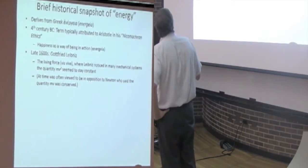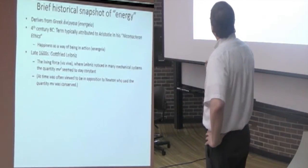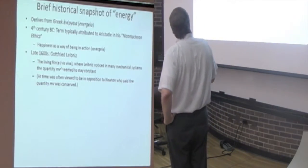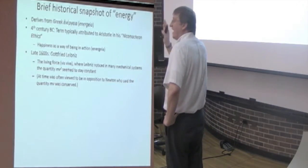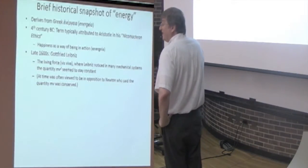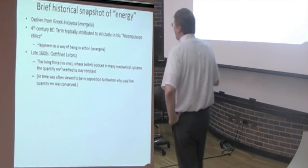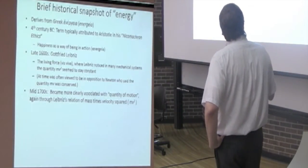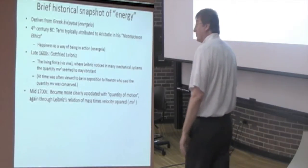Quite a while later, late 1600s, Leibniz now started to become much more quantified in terms of its use. The living force vis viva, where Leibniz noticed in many mechanical systems that this strange quantity mass times the speed squared seemed to stay constant. A little science history. It was interesting at the time, this was often viewed to be in opposition to Newton, who said it was mv, mass times velocity, not mass times velocity squared that was conserved. It's nice in this case to have both people be right.